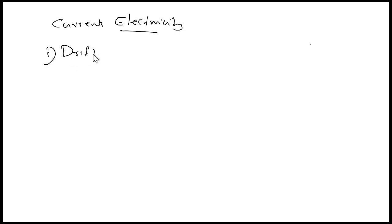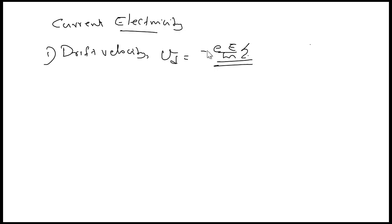First, we discuss drift velocity. What is the formula for drift velocity? I = nAVd. The general formula for drift velocity is Vd = -eE/m × τ. Here, small e is the charge of the electron, capital E is the electric field strength, m is the mass of the electron, and τ is the relaxation time.